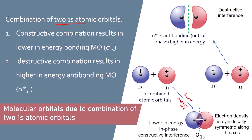Now let's see the combination by subtracting — out of phase. Subtracting orbitals results in two sigma star 1s molecular orbitals, also called sigma asterisk. Electrons in these anti-bonding molecular orbitals are in the excited state and have higher energy than the bonding and uncombined states.